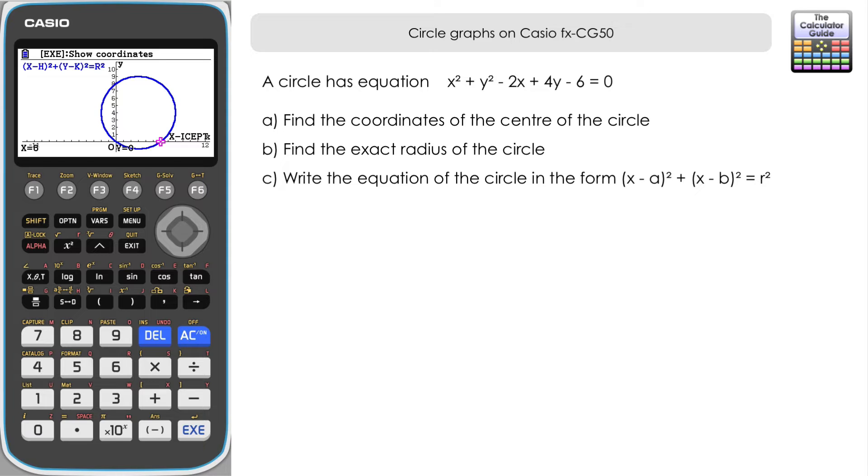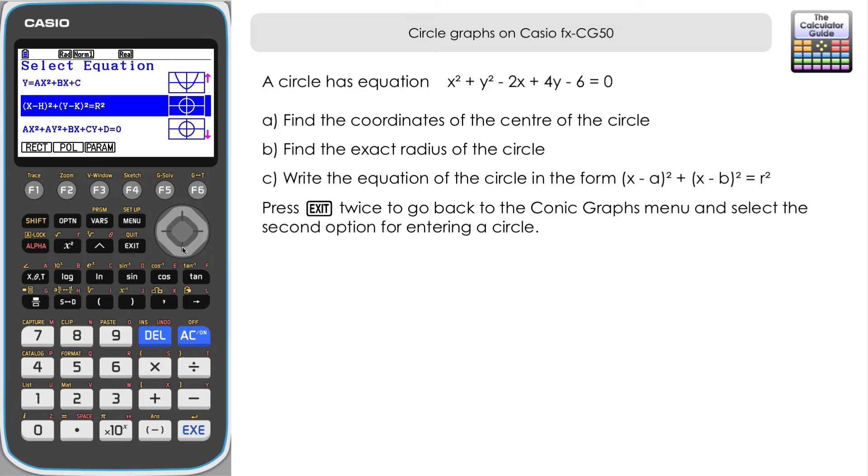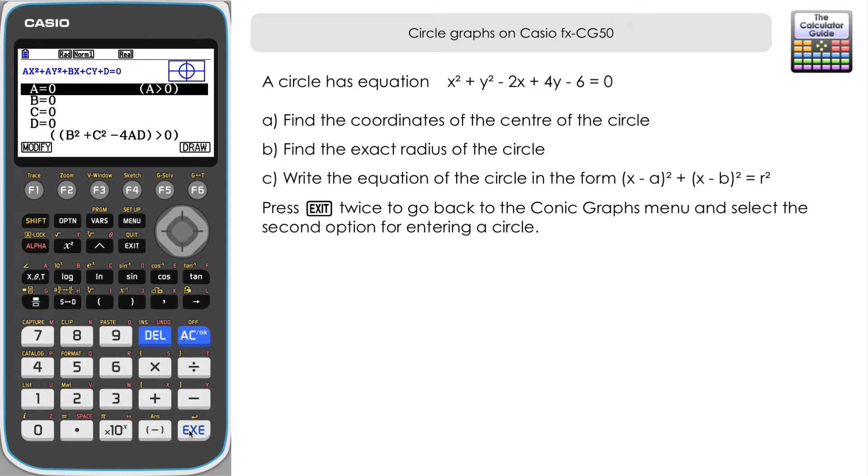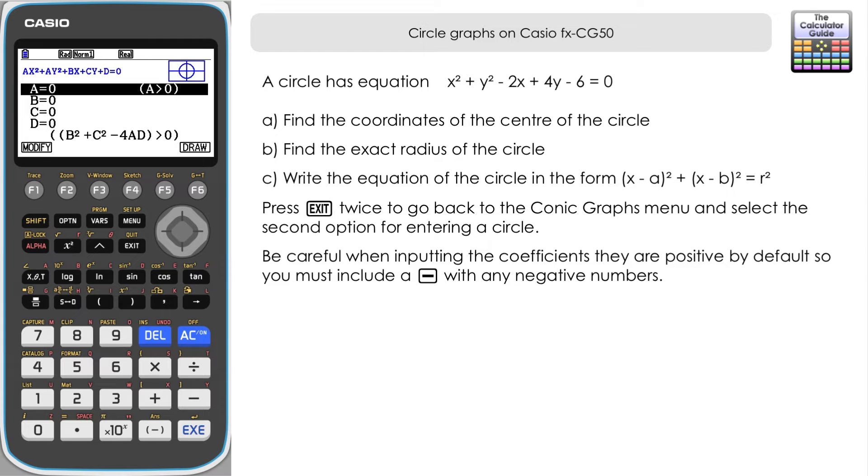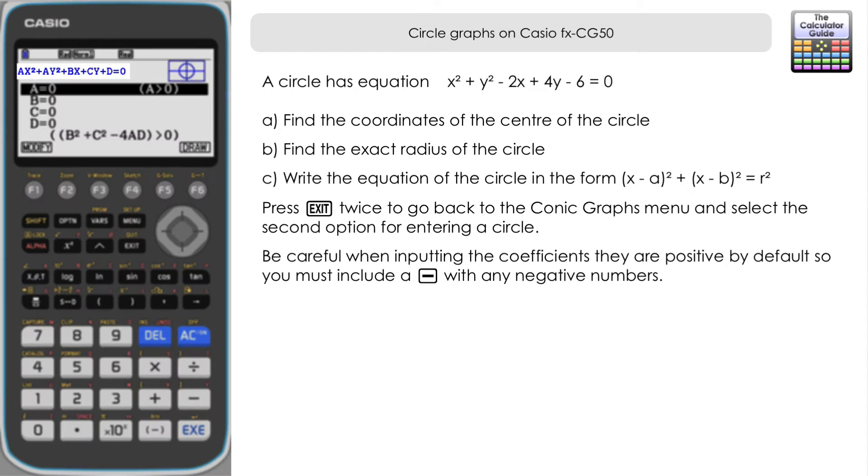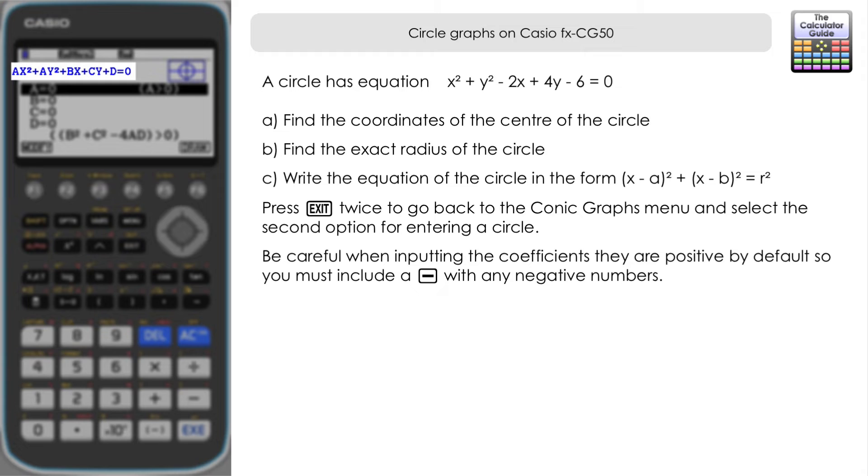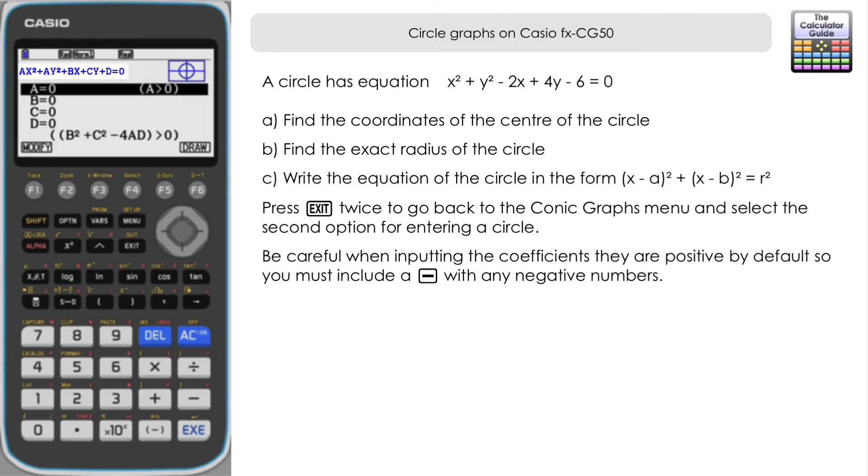So let's first of all use the conic graphs to input the equation of this new circle. If you just press exit twice from there, we should come back to the menu screen. And we want the second option here. You can see that that matches the way that the circle equation is given in this second question. So we want the second option for the circle. And notice here as well that they're all positive, all the coefficients are positive here. So you just have to be careful to input it if we have a negative.